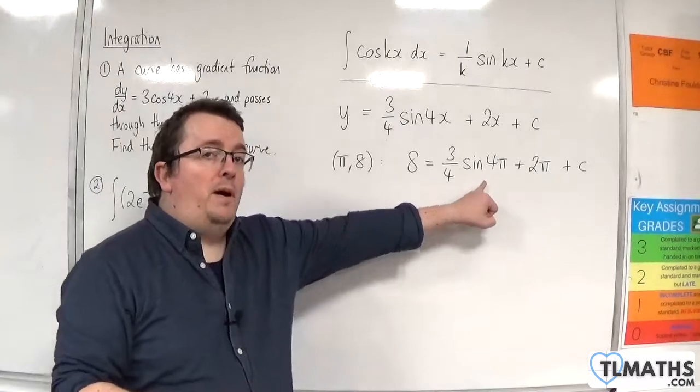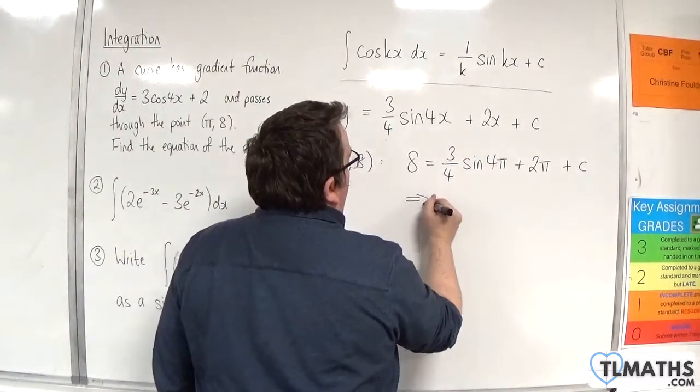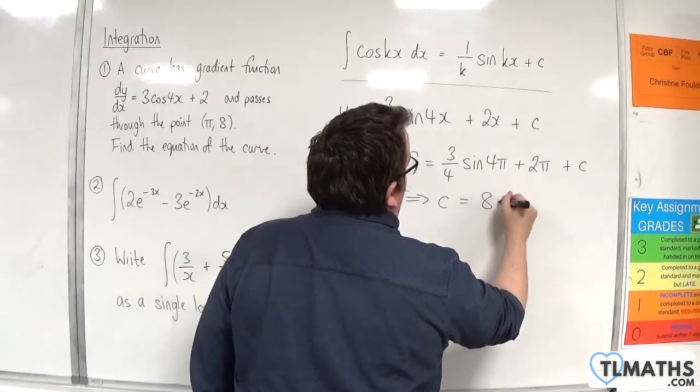Now, sine of 4 pi is 0, so that's gone. That implies that c must be 8 take away 2 pi.